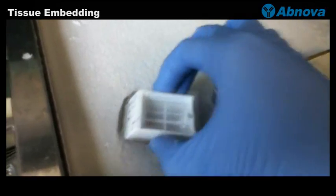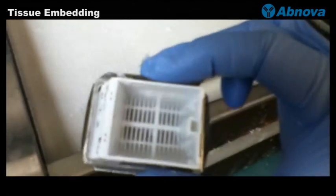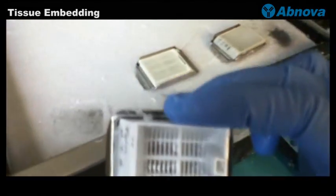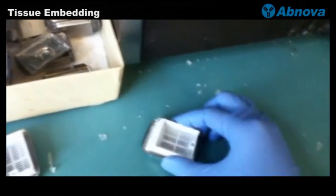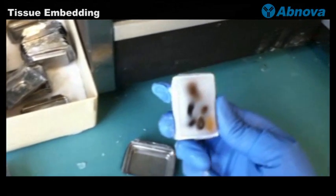After it is totally solidified and you can see the paraffin become clear, you can tap it on the cold surface and loosen it and take out the whole block without any problem.